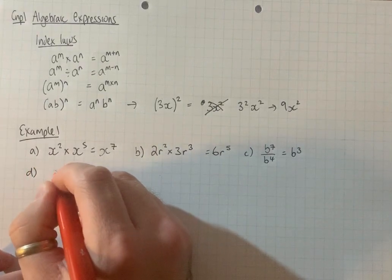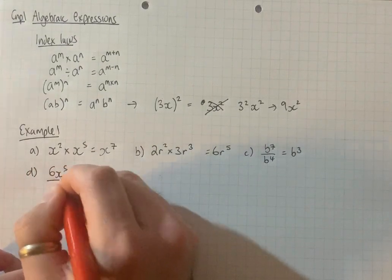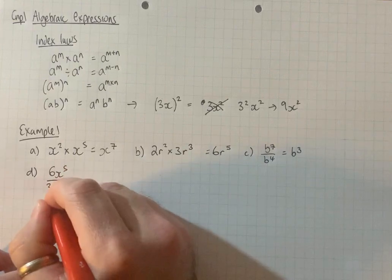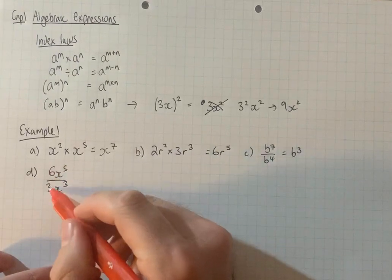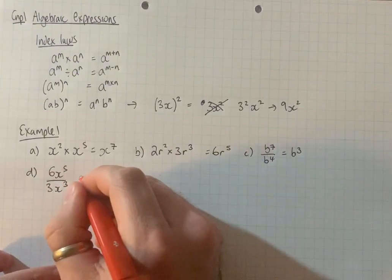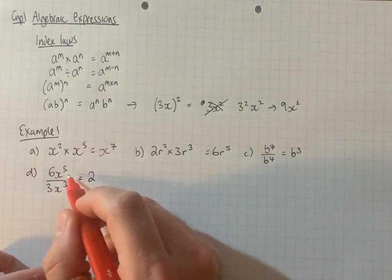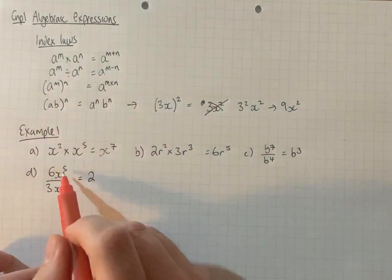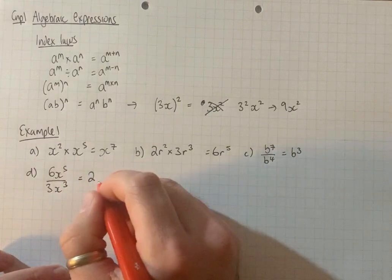6x to the 5 divided by 3x cubed. Do the coefficients first. 6 out of 3 is 2. x to the 5 divided x to the 3. Using the division rule, just subtract the powers. 5 take 3 is 2.